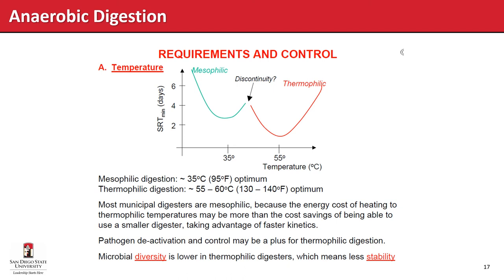One advantage of thermophilic digestion is pathogen deactivation and control, enabling production of Class A biosolids that can be land-applied to agricultural fields for fertilization. The drawback is reduced microbial diversity in thermophilic digesters, which means less stability and more difficult operation requiring tighter process controls.